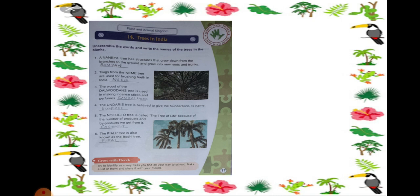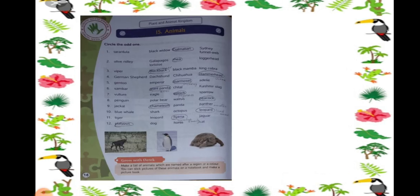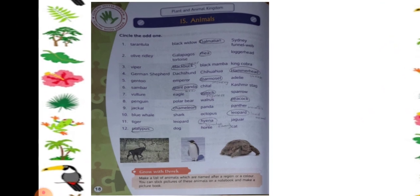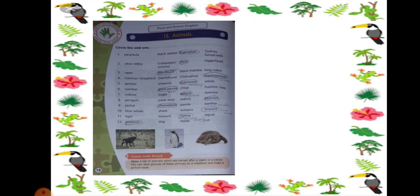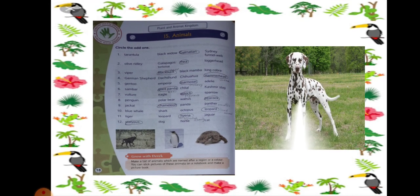Now we are moving to our next page, page number 18. This is about animals and we have to circle the odd one out. Number 1 is Tarantula, Black Widow, Dalmatian and Sydney Funnel Wave. The odd one is Dalmatian. Why? Because Dalmatian is a dog and the others, they are the names of spiders. This is a Dalmatian. You can see this is a picture of a Dalmatian, a dog.